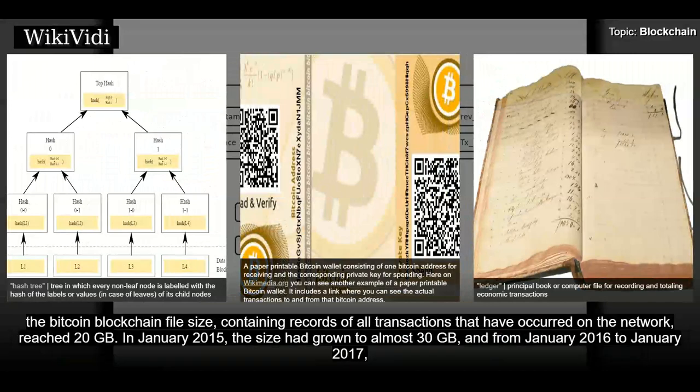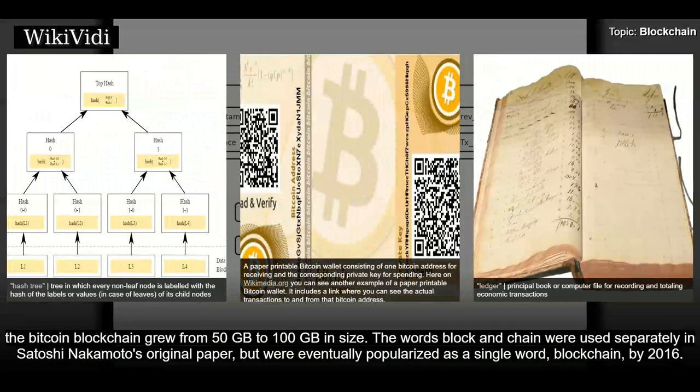In August 2014, the Bitcoin blockchain file size, containing records of all transactions that have occurred on the network, reached 20 GB. In January 2015, the size had grown to almost 30 GB, and from January 2016 to January 2017, the Bitcoin blockchain grew from 50 GB to 100 GB in size. The words block and chain were used separately in Satoshi Nakamoto's original paper, but were eventually popularized as a single word, blockchain, by 2016.